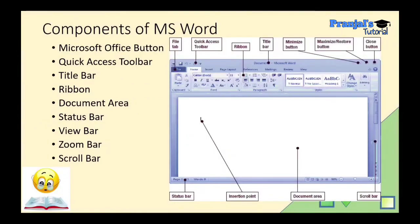Next, components of MS Word. If you want to open MS Word, click on the Start button, then click on All Programs, click on Microsoft Office, and then select Microsoft Word.